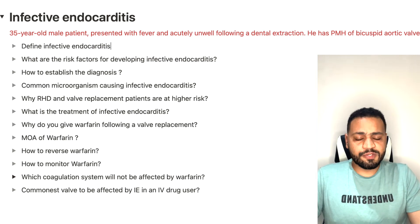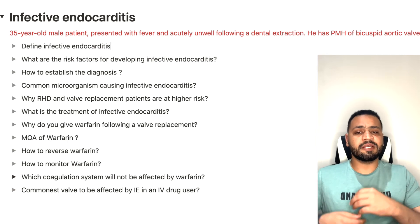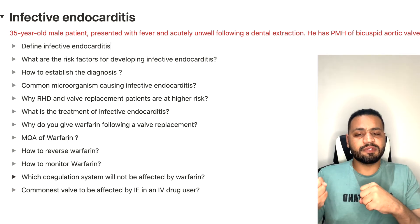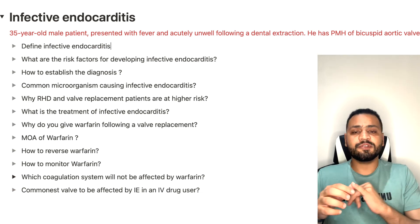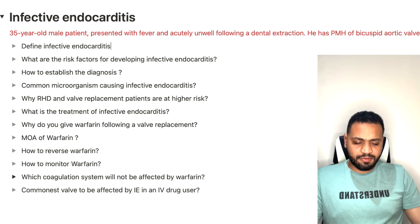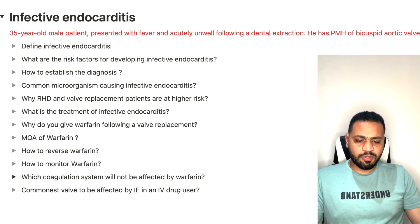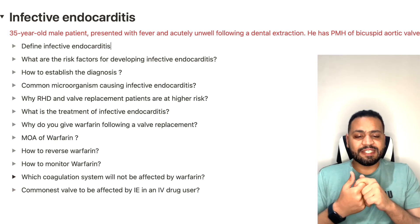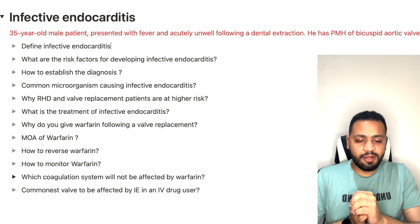To reverse warfarin in a patient with a high INR, you give vitamin K or the vitamin K-dependent factors directly. There are two ways to give the factors: either fresh frozen plasma or human prothrombin complex concentrate. The intrinsic coagulation pathway will not be affected by warfarin.